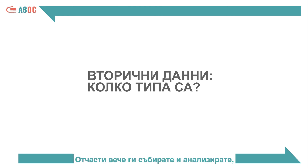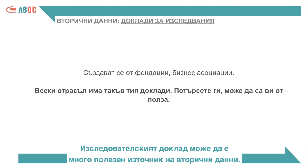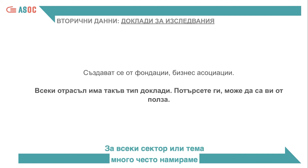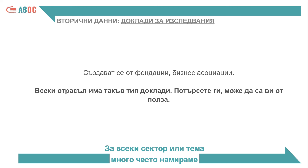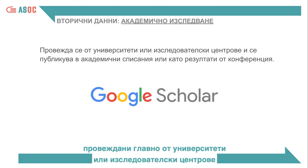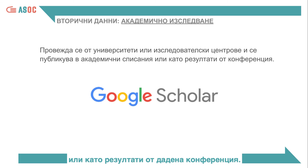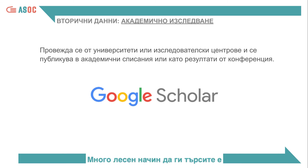Every research study needs secondary data. You are already collecting and analysing them to make your research more thorough. There are different types. A research report can be a very useful secondary data source, and we find research reports of this type very often for each sector or subject. Another example is academic research, which is conducted mainly by universities or research centres and published in scientific journals or as the outcome of a conference. A very simple way to search for them is to use the Google Scholar search engine.